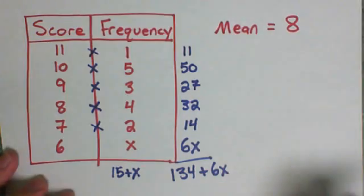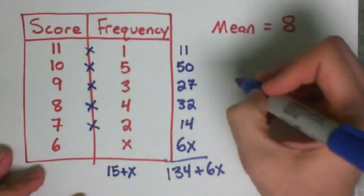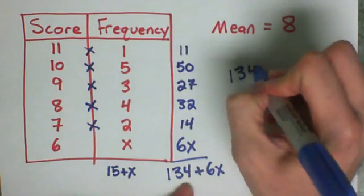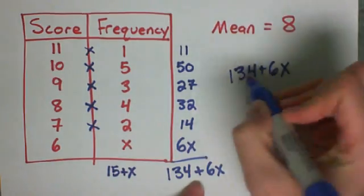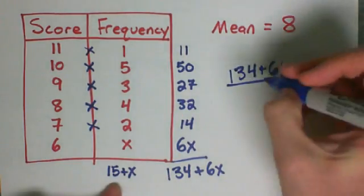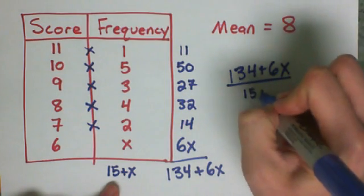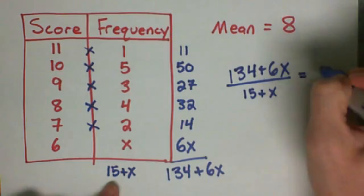Okay, so to find out the mean, what I usually do is I take my number that I get, 134 plus 6x, and I divide it by how many numbers there were, which is 15 plus x. And that is going to give me my answer of 8.